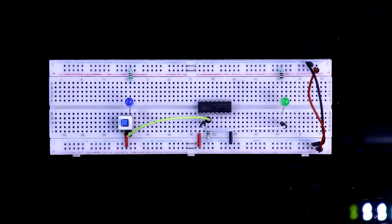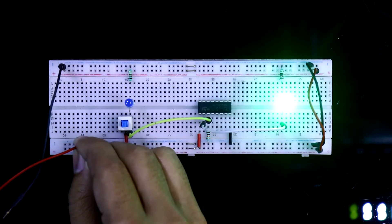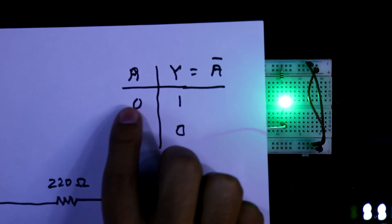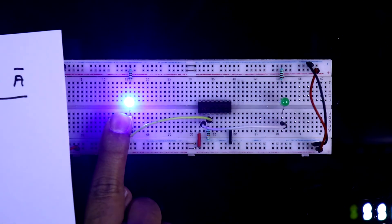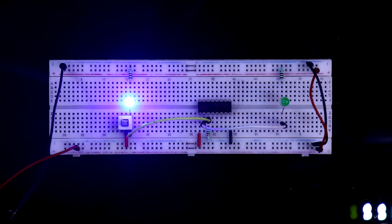Now, I am connecting plus 5 volt as power supply. Here is the negative and the positive. When input is 0, we should get the output. We are getting the output. And when input is 1, the output is 0. So, in this way, this IC works.